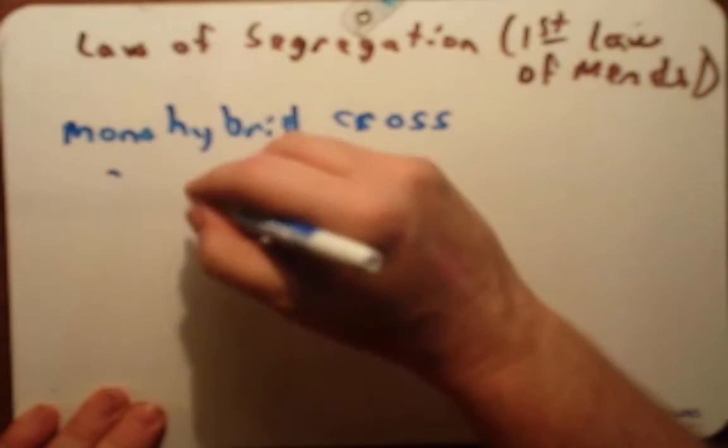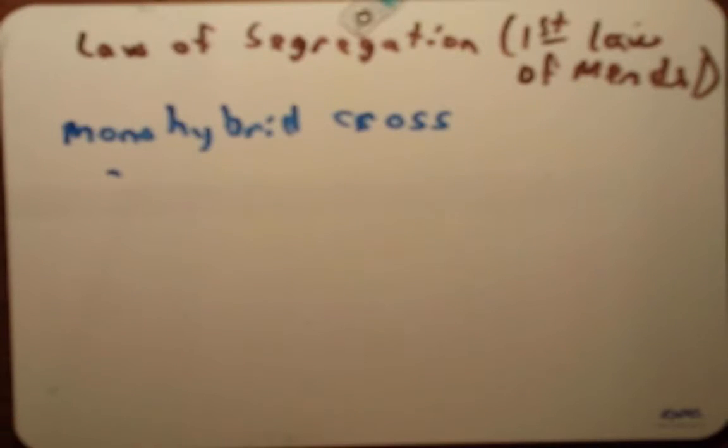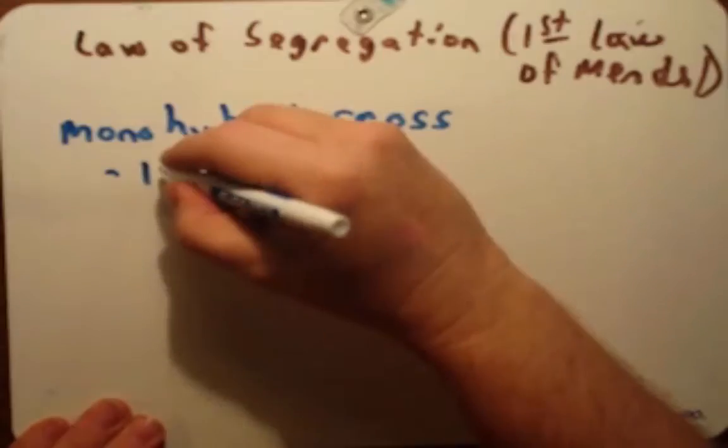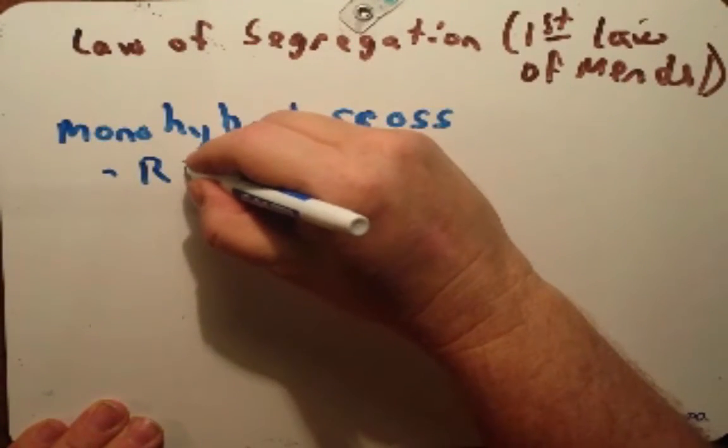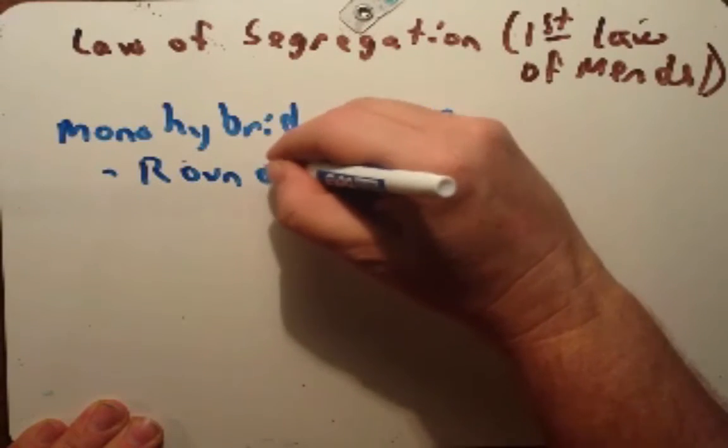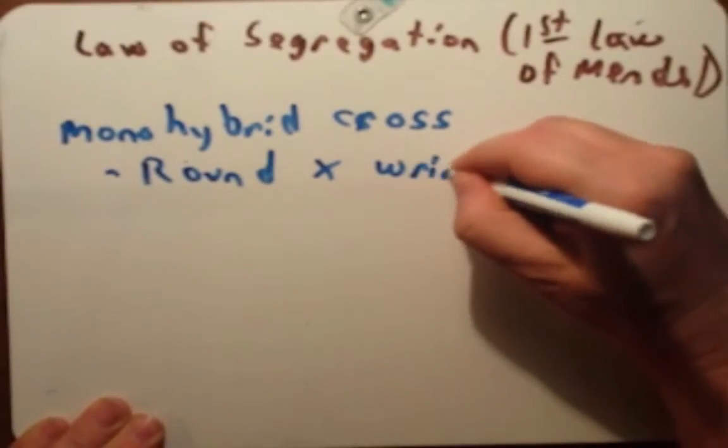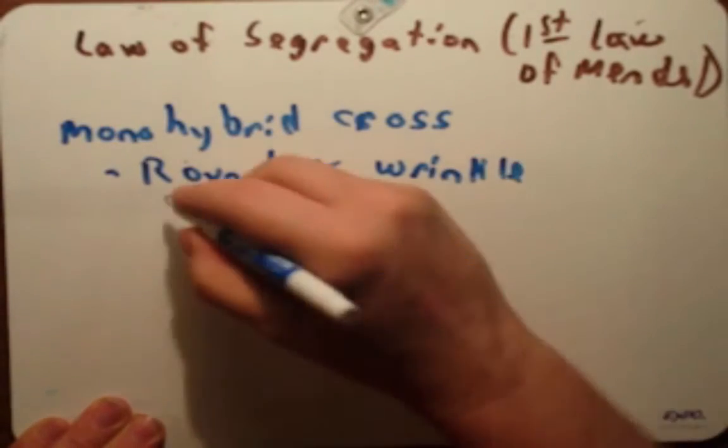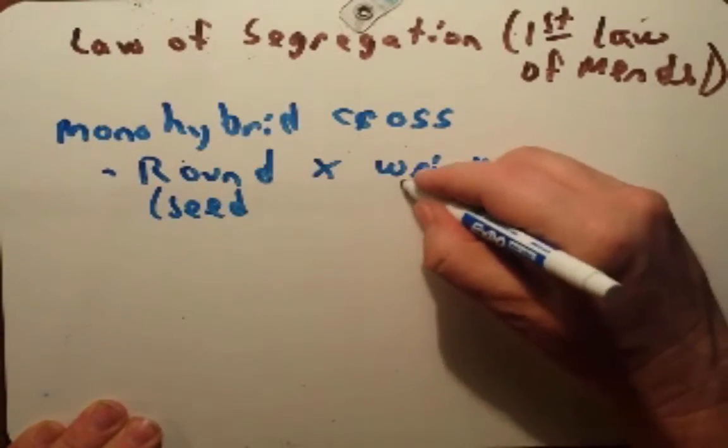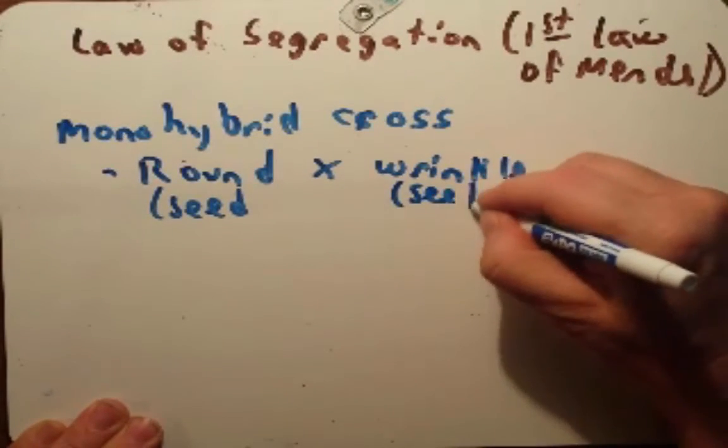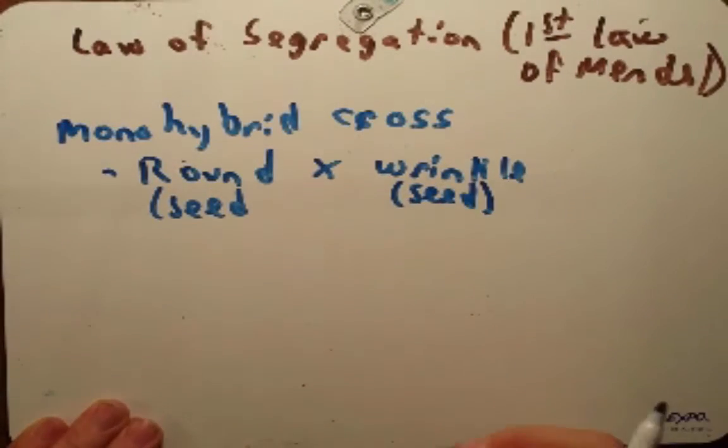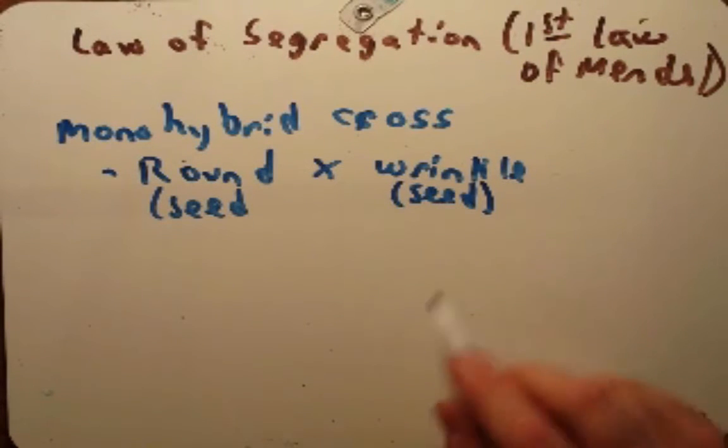This is when you have two parents that have different variations for the same trait. So you may take a round plant, we'll use some of Mendel's terms here, round plant and cross it with a wrinkled plant. Actually we call it round seed and wrinkled seed. So this seed here was just really smooth on the outside, this one had ridges on it.